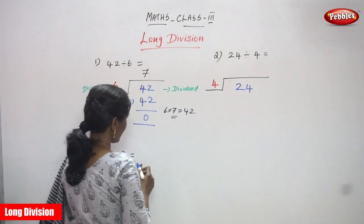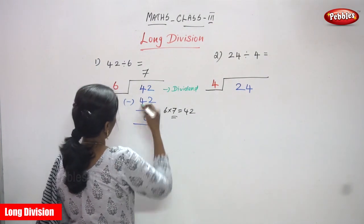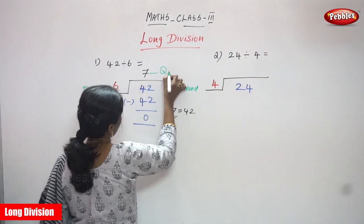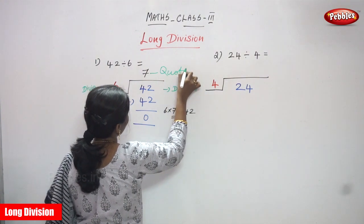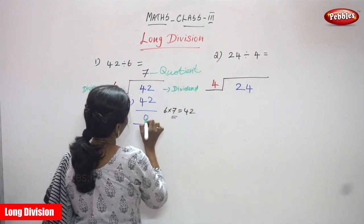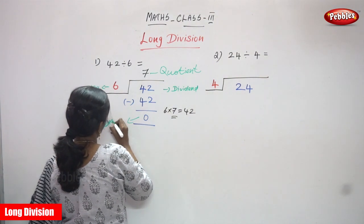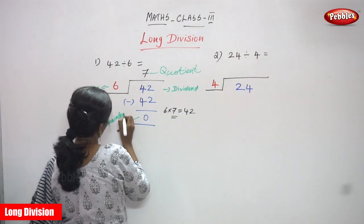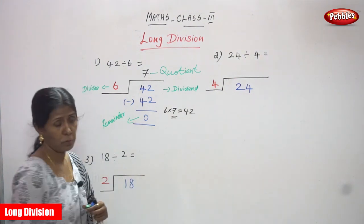42 minus 42 you can get 0. So what is the answer? This is an exact quotient. Q-U-O-T-I-E-N-T, quotient. And 0 is a what? Remainder. So this is the long division method.